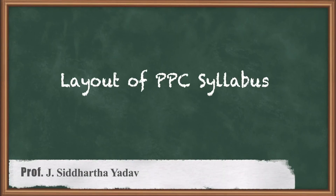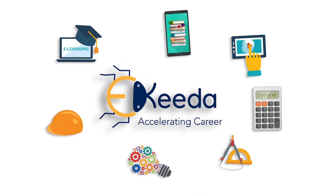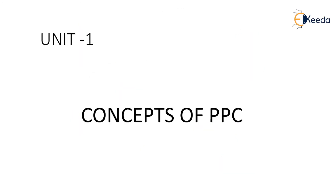Hi all, today we will be learning about the topic Production Planning and Control. The syllabus present under this course will be explained in this video. The first unit consists of the basic concepts of production planning and control — what is production, how to plan for it, and how to control it are the basics that will be learned under Unit 1, which covers the concepts of PPC.